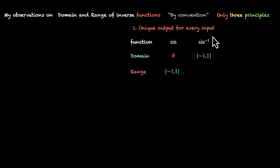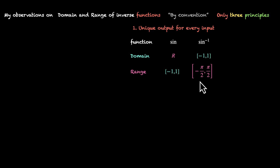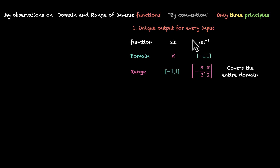We want a unique output for every input. Looking at the domain, we have positive values and negative values. By convention, we've defined the range as minus π/2 to π/2. Let's pause and think about why this range makes sense. The domain is all values from minus one to one — positive and negative. For all positive values, the range can be quadrant one, that's from zero to π/2. And for all negative values, the range is minus π/2 to zero — the fourth quadrant. Together these two quadrants cover the entire domain without any overlap, which means we've satisfied the first principle: unique output for every input.